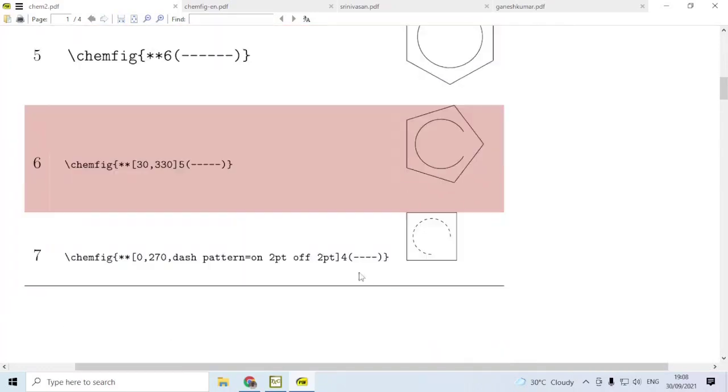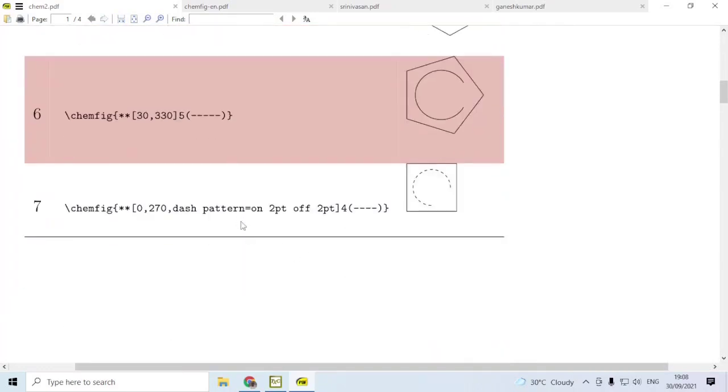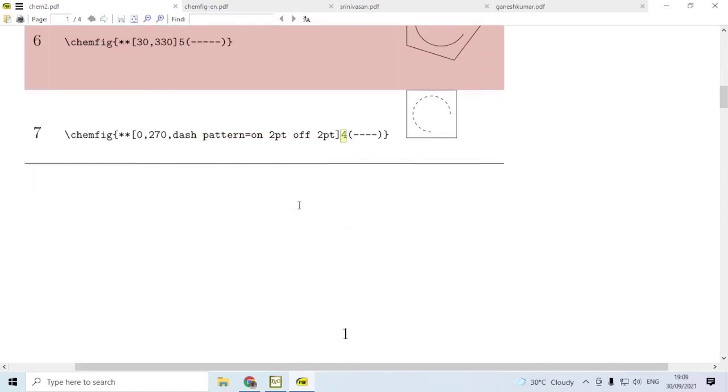Now, let us consider the next case. You can also specify for the inner circle the tikz code like this. You can have a dashed pattern, and this starts at 0 degrees, goes up to 270 degrees, and the dashed pattern is specified like this. We are considering a 4-sided ring.